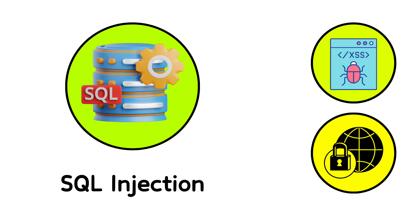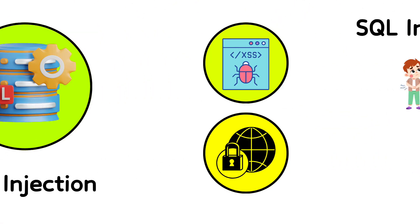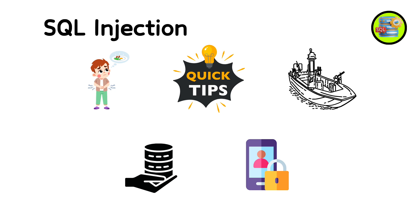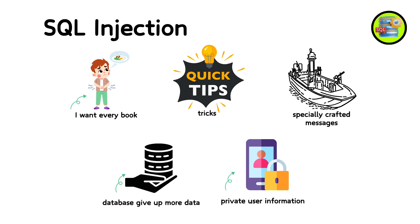11. SQL Injection. Imagine if you told a librarian, 'I want every book you have,' and they gave them all to you without checking if you should have them. SQL injection is similar — it happens when a hacker tricks a website into revealing information it shouldn't. They do this by sending specially crafted messages that make the website's database give up more data than intended, like private user information.